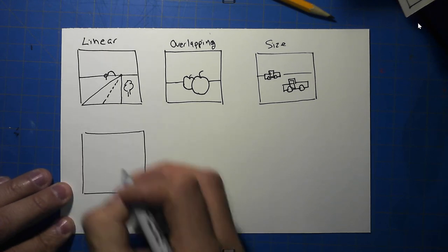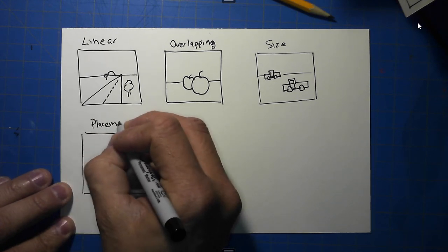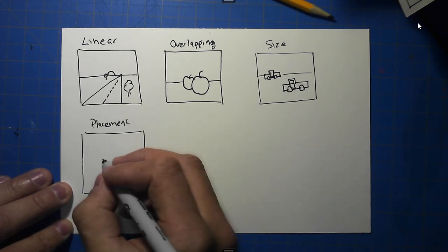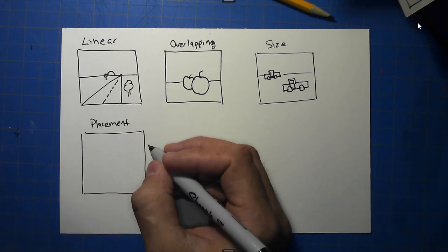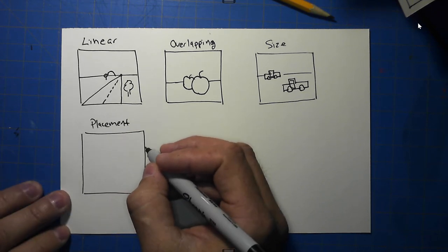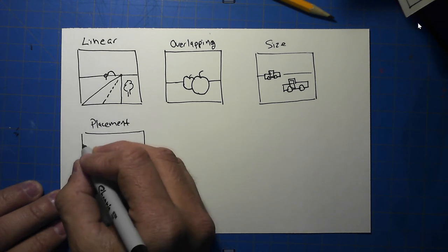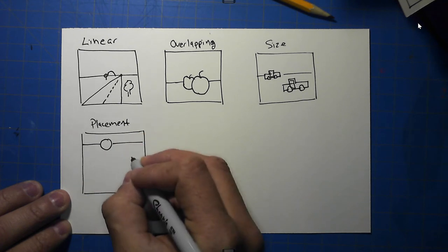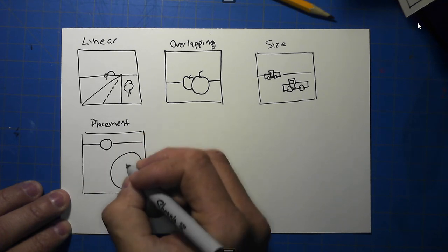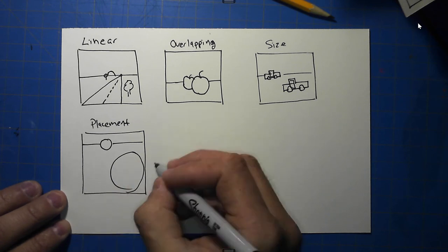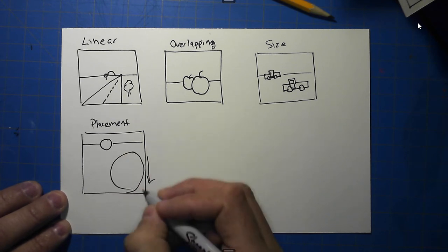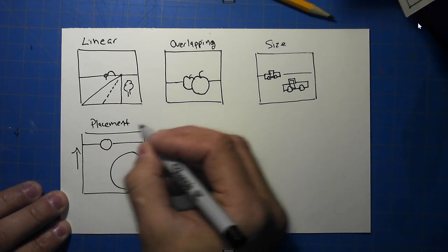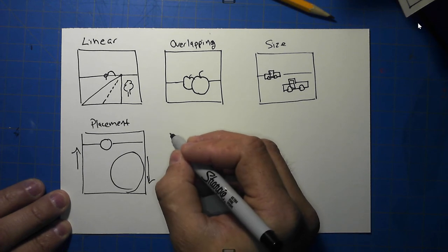The placement of objects also indicates space, and this is similar to size but is popular amongst Oriental works of art where you have a very high point of view. So we're going to place our horizontal line up here. This ball right here, which is lower, tends to be closer to us, and things that are higher tend to be further away. So placement on paper also indicates the illusion of space.